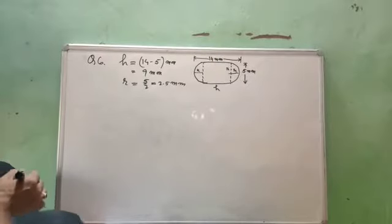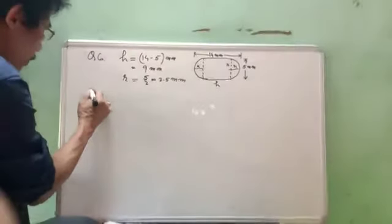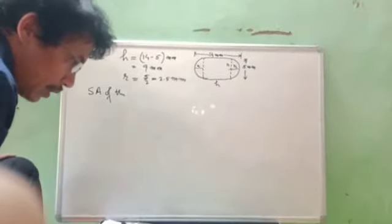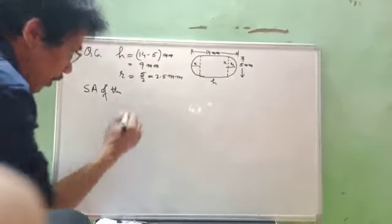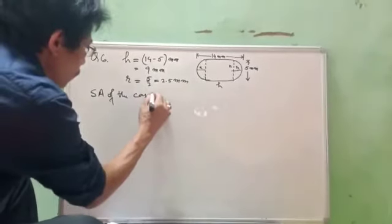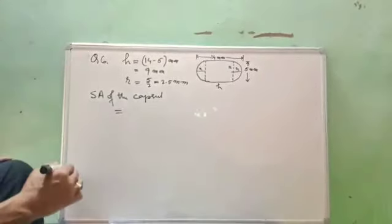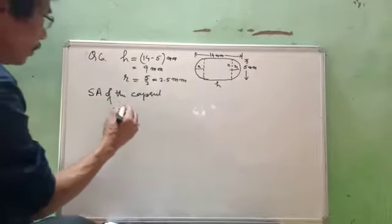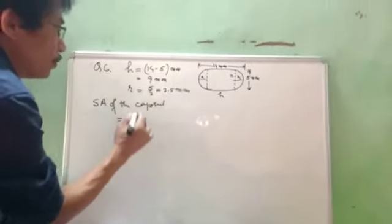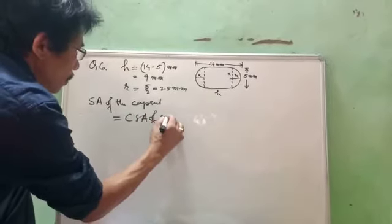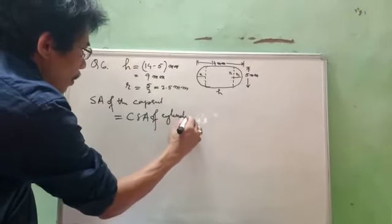We are going to find out the surface area of the SA of the capsule. It's written here. The surface area of the capsule equal to, right equal to here. Now, we have a cylinder here. So cylinder we need to take only CSA. CSA of cylinder.